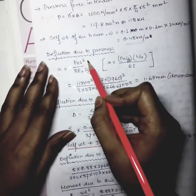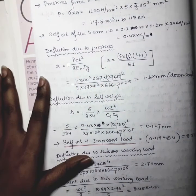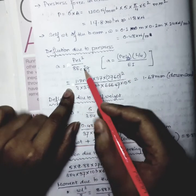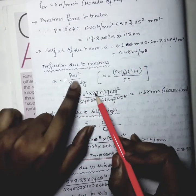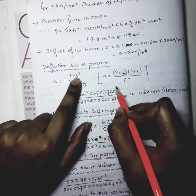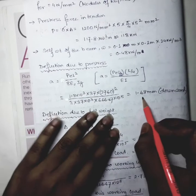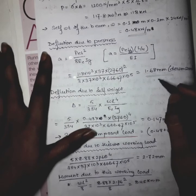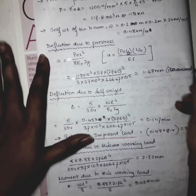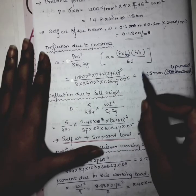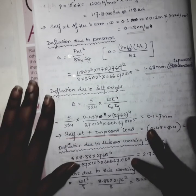The deflection due to pre-stress formula is PeL²/(8EI). Substituting P = 118 kN, e = 37 mm, L = 2760 mm, E = 37 kN/mm², I = 666.67 × 10⁵ mm⁴, the deflection due to pre-stress = 1.68 mm upward, because pre-stress causes the beam to camber upward.